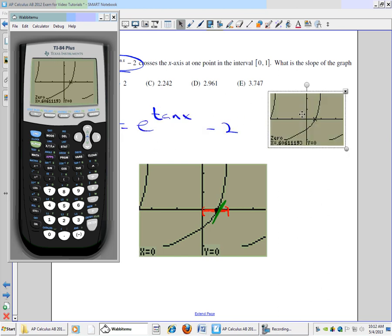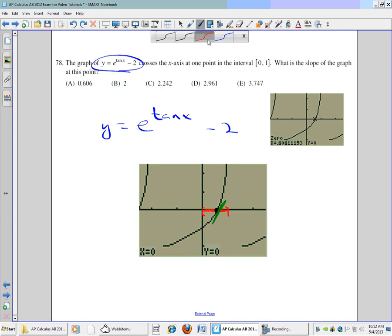We're going to notice that that value is x equals 0.60611193. Alright, now I don't want to round anything at this point, because I want an accurate answer.